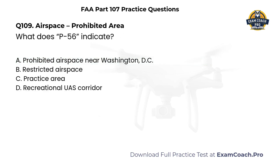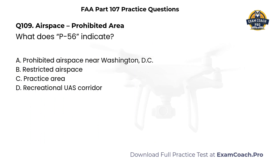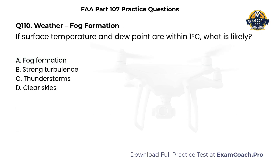Airspace. Prohibited area. Refer to Figure 15, sectional chart with prohibited area labeled P-56A and B. What does P-56 indicate? A. Prohibited airspace near Washington, D.C. B. Restricted airspace. C. Practice area. D. Recreational UAS Corridor. Correct answer: A. P-56 is prohibited airspace near Washington, D.C., restricting all operations unless permission is granted.